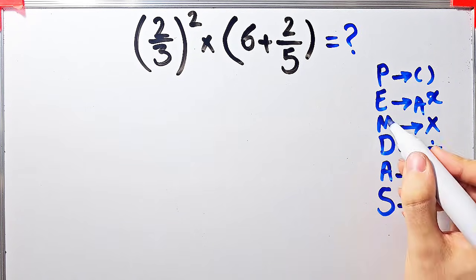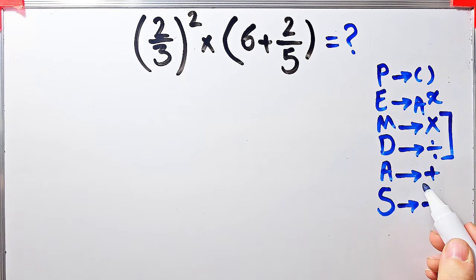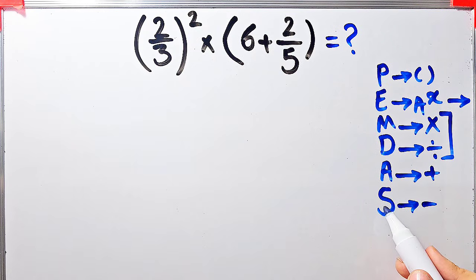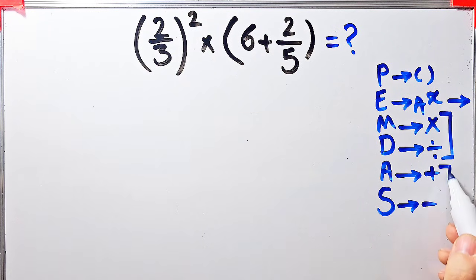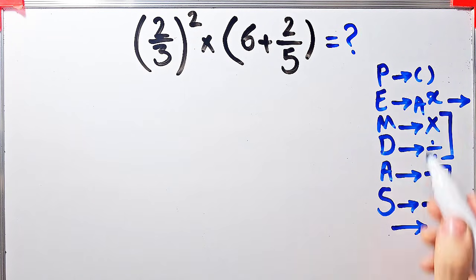Multiplication and division have the same level of priority. When we have both in an expression, we start from the left and simplify. Addition and subtraction also have the same level of priority, and when we have both in an expression we start from the left and simplify, according to the PEMDAS rule.